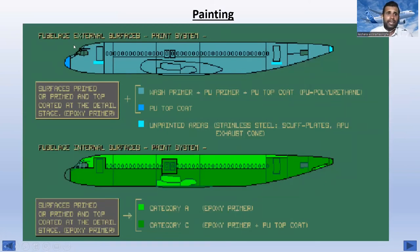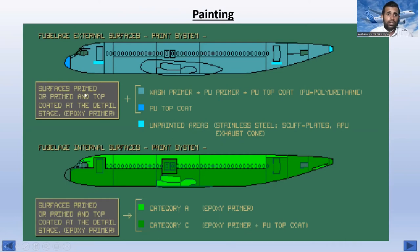Now for painting: the fuselage external surfaces paint system uses a wash primer plus polyurethane primer plus polyurethane top coat — 'PU' means polyurethane. This is the polyurethane top coat. The surface is primed and top-coated at the detail stage with epoxy primer. The fuselage internal surfaces have a separate paint system.